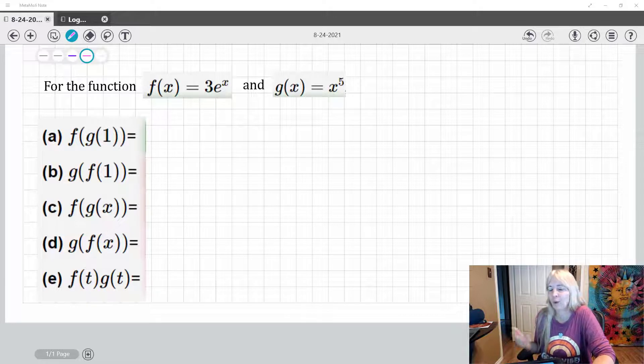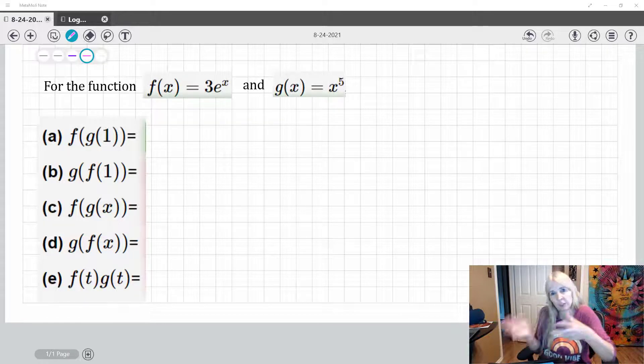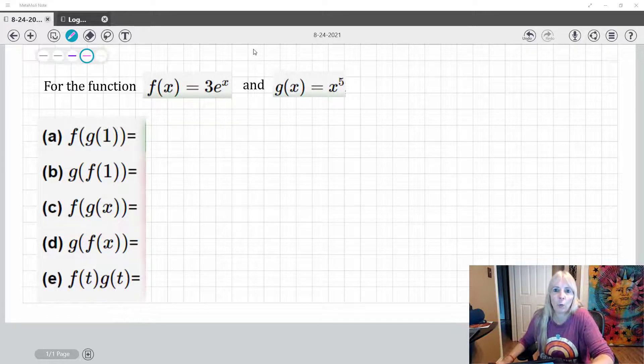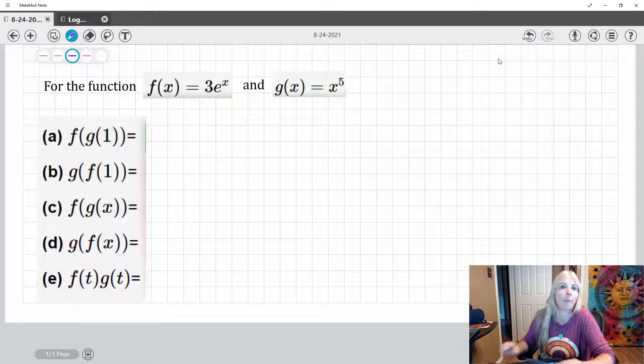So in other words, like we always use the example, like you make money and you put it in a savings account and the savings account earns interest. So there's different things happening. That's all we talk about when we talk about composite functions.